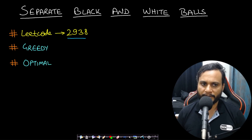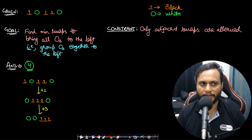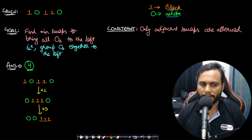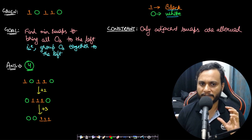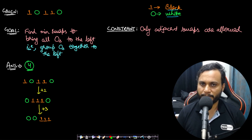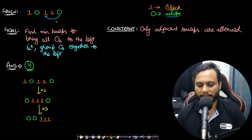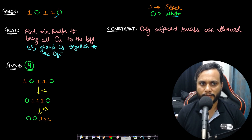Let's look at an example for better understanding. Say we are given the string '10110', where 1 means a black ball and 0 means a white ball. Our goal is to find the minimum number of swaps to bring all the zeros together on the left hand side, and our constraint is that only adjacent swaps are allowed. So we cannot simply swap a zero with a one directly — instead we have to swap step by step.